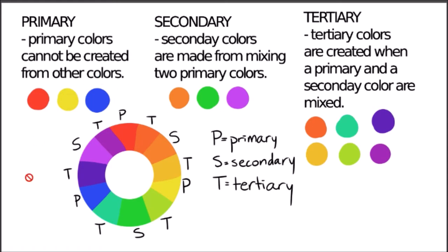Here on the color wheel, I have listed a handy little guide. P is for primary, so we can see the red and the yellow and the blue. The secondary is all here, and the tertiary is labeled by the T's. Now we can get into color schemes.